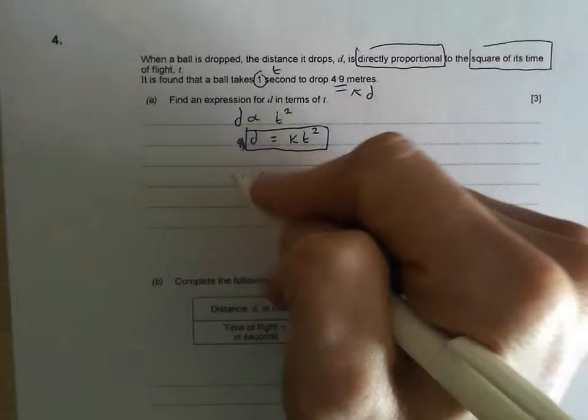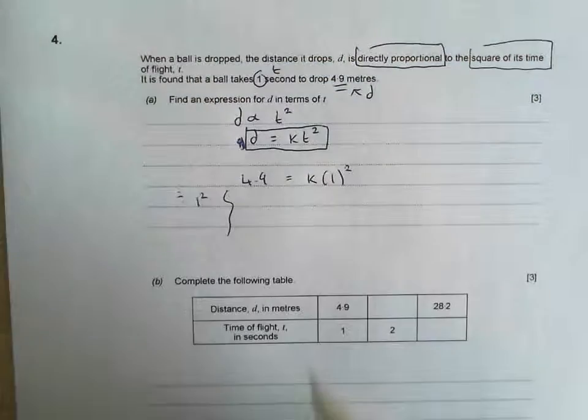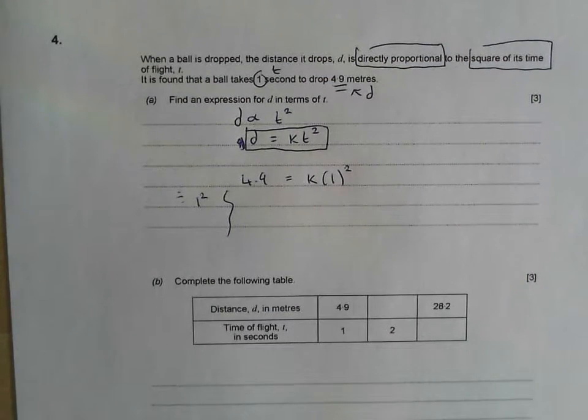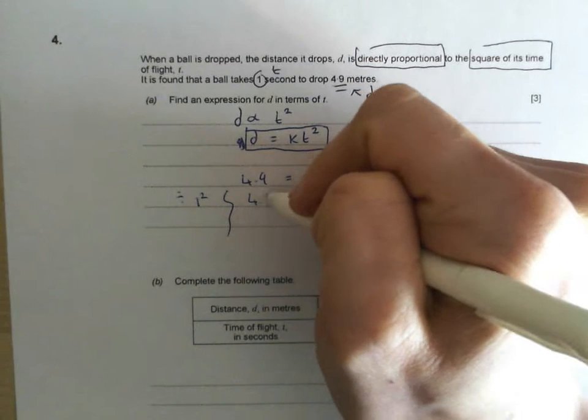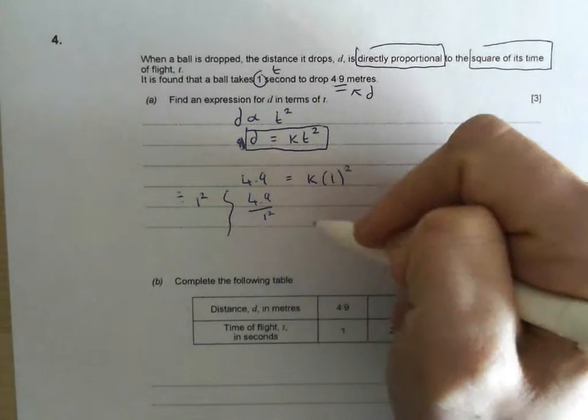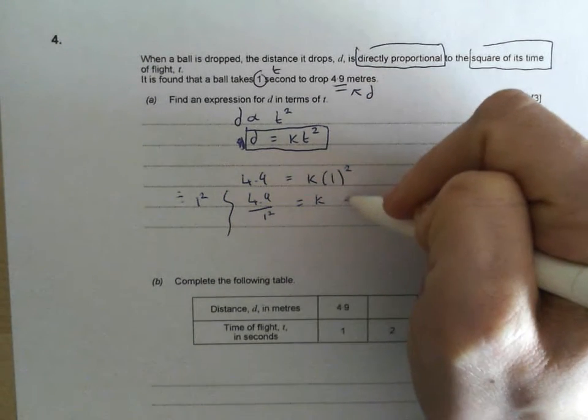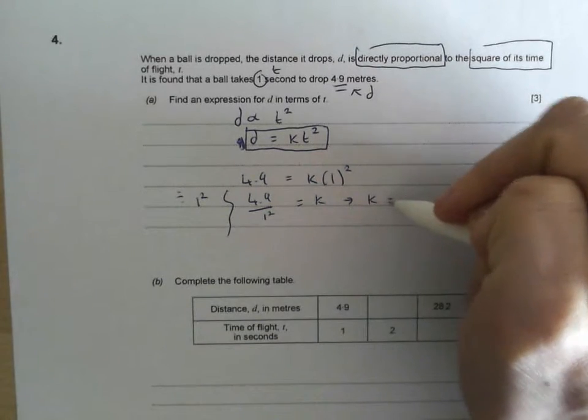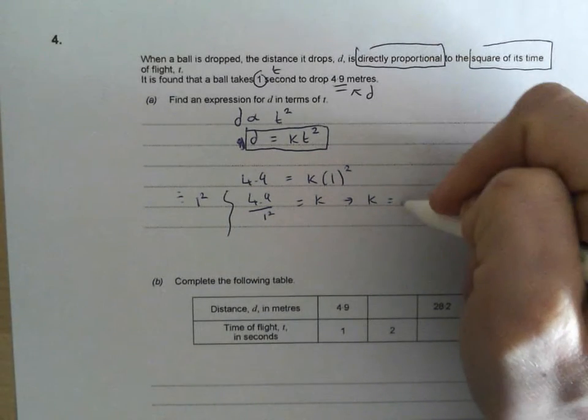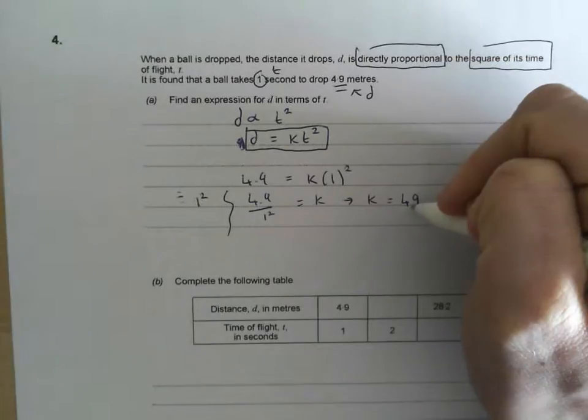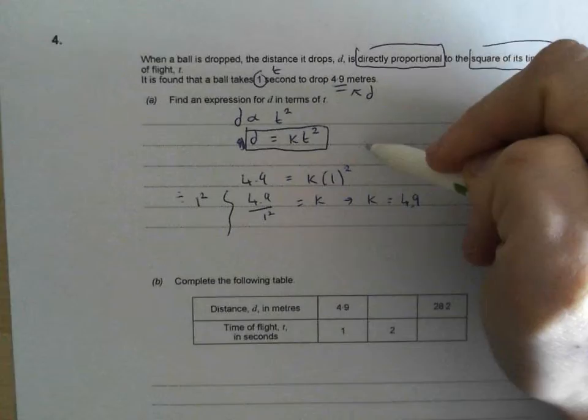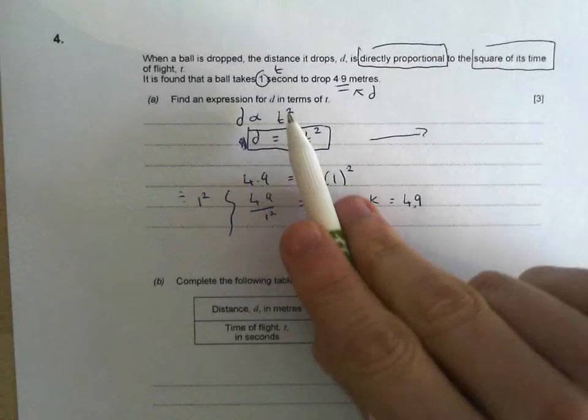Let's rearrange that. Divide both sides by my 1 squared, otherwise known as 1. So I just get 4.9 divided by 1 squared, which is going to give me k. So k equals 4.9 divided by 1 squared is 4.9 divided by 1, otherwise known as 4.9. So let's write it as an expression.